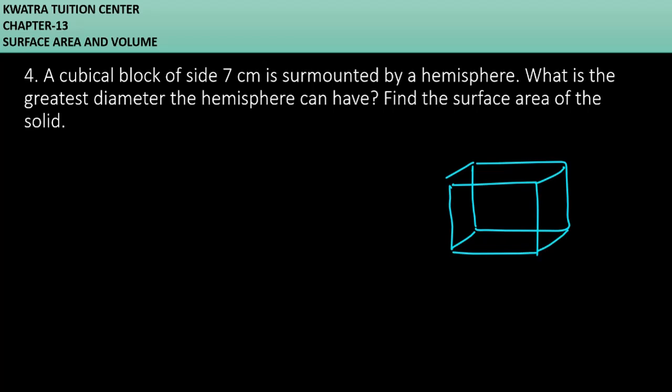And on it we have a hemisphere. Now they are asking what is the greatest diameter the hemisphere can have? Look, how much is this side? 7 cm. So yes, the greatest diameter of the hemisphere can be 7 cm, not more than that, because the side is 7 cm. So obviously, the greatest diameter will be 7 cm.